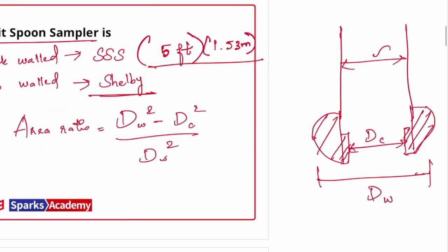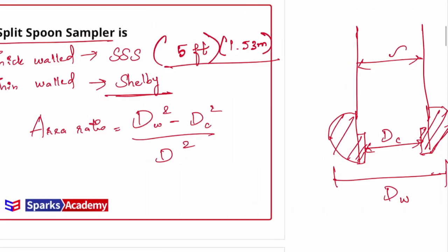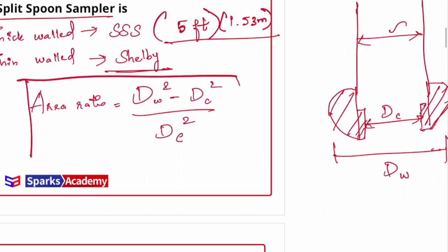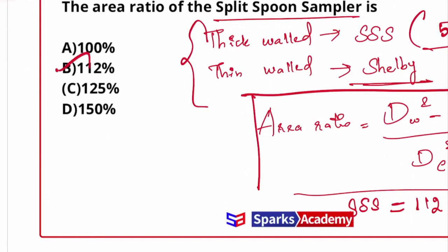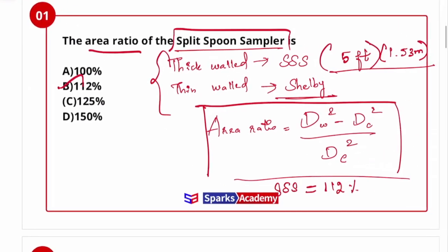So the area ratio is (dc² - dw²) divided by dw². For the split spoon sampler, this works out to approximately 1:1, which is around 100%. So Option B is the right answer. This is how you use the area ratio for samplers.